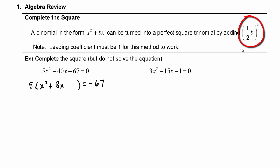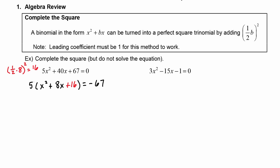Now we add the constant term by taking half of b and squaring it. In this case b equals 8, so we take one half of 8, which is 4, and square that to get 16. So the constant term we add inside the parentheses is plus 16. We have to counteract that on the right-hand side, but be careful — it's not really 16 that we added, it's 5 times 16, so on the right-hand side we put plus 5 times 16.